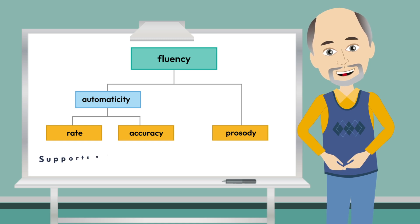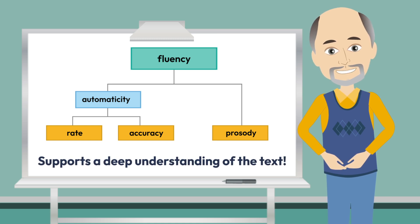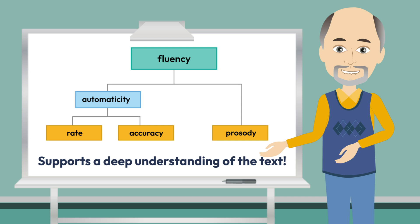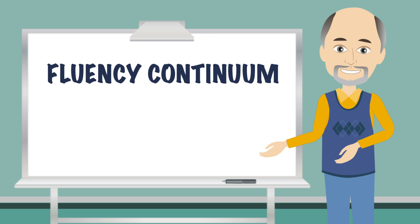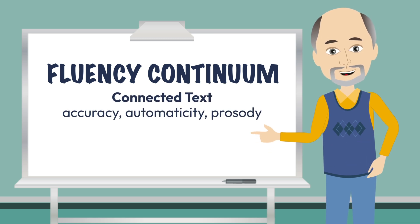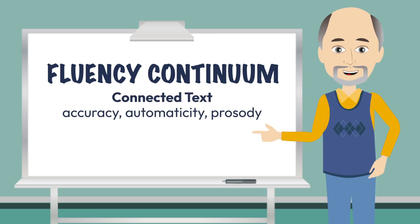Our goal is to develop readers that read text with reasonable accuracy at an appropriate rate and with suitable prosody that supports a deep understanding of the text. We briefly walked through a fluency continuum where we solidified the fact that fluency development begins when students can read connected text: accuracy, automaticity, prosody.